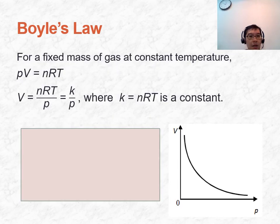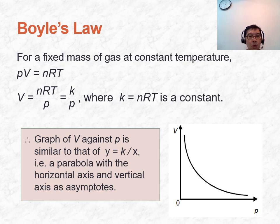Boyle's Law has certain conditions: it applies to a fixed mass of gas at constant temperature. Through manipulation, V is inversely proportional to P, where the numerator K equals nRT, which is a constant. If you plot V against P, it is a parabola — this is how the graph looks.